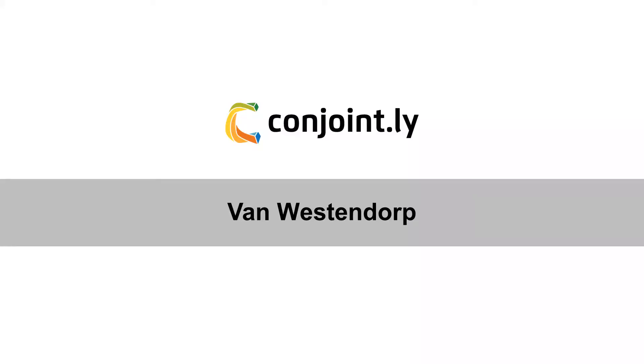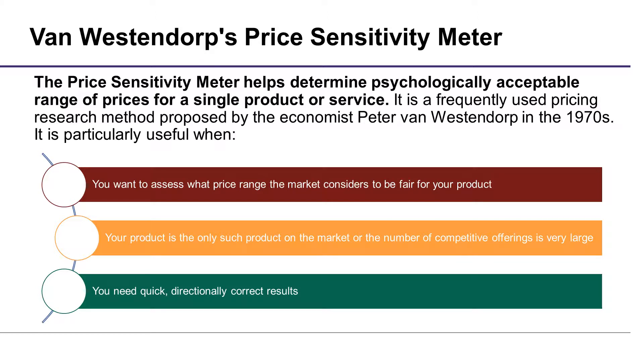Hello from Conjointly. Let's talk about the Van Westendorp Price Sensitivity Meter. This test helps determine the psychologically acceptable range of prices for a single product or service.